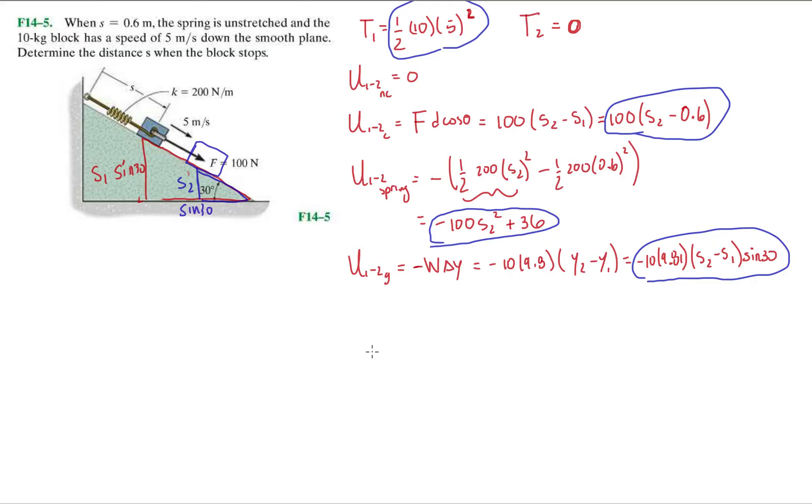Okay. So, let's see. That's 5 times 25. That's 125. So, T1 is 125. Okay, let's add up all our conservative, non-conservative work, or work done by non-conservative and conservative forces. That'll be plus 100 S2 minus 0.6. Then, we have minus 100 S2 squared plus 36.